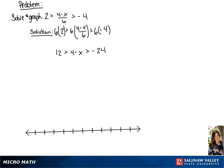The next thing we are going to do is subtract 4 from all sides of this inequality. This will give us 8 is greater than negative x, and negative x is greater than negative 28.